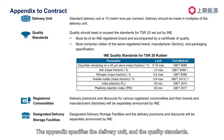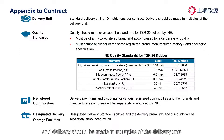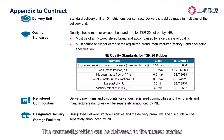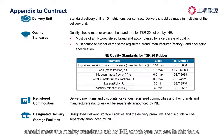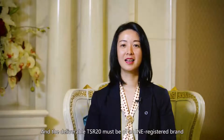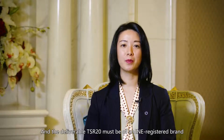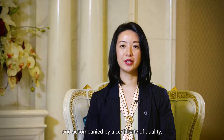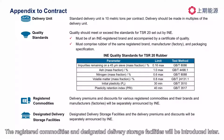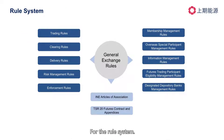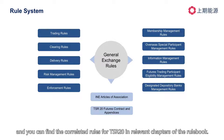The appendix specifies the delivery unit and the quality standards. The standard delivery unit is 10 metric tons, and delivery should be made in multiples of the delivery unit. The commodity which can be delivered to the futures market should meet the quality standards set by INE, as shown in the table. The deliverable TSR20 must be of an INE registered brand and accompanied by a certificate of quality. INE has a very complete rule system, and you can find the correlated rules for TSR20 in relevant chapters of the rule book.